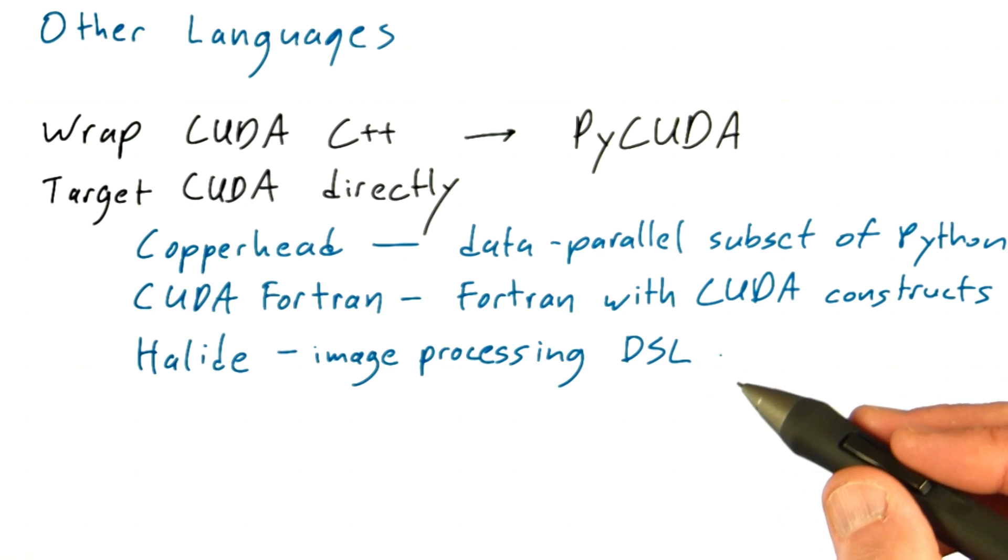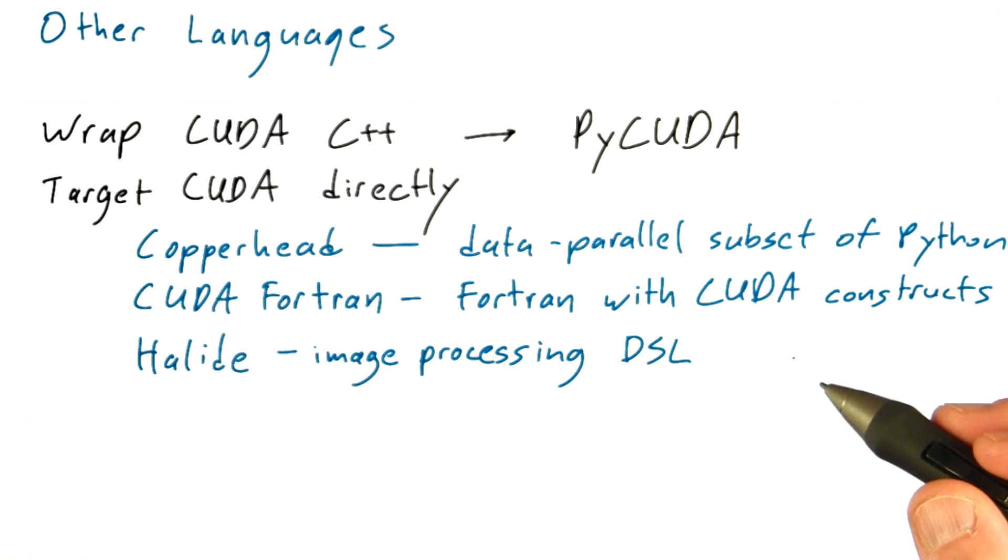Halide targets GPUs as well as multi-core CPUs on both desktops and on mobile devices. Many of the parallel optimization patterns we've discussed, such as tiling, are particularly easy to express and optimize in Halide. That makes it possible to get very high-performance image processing code.